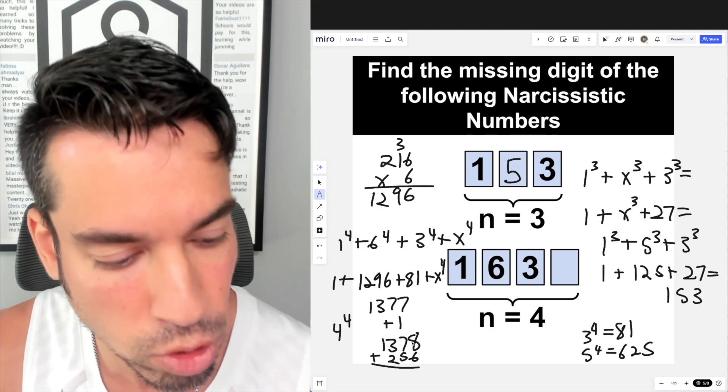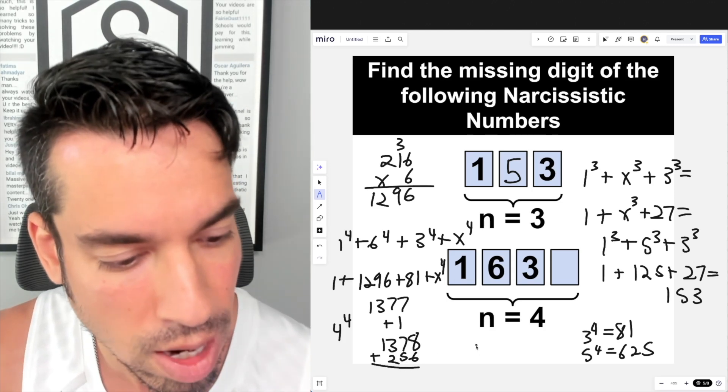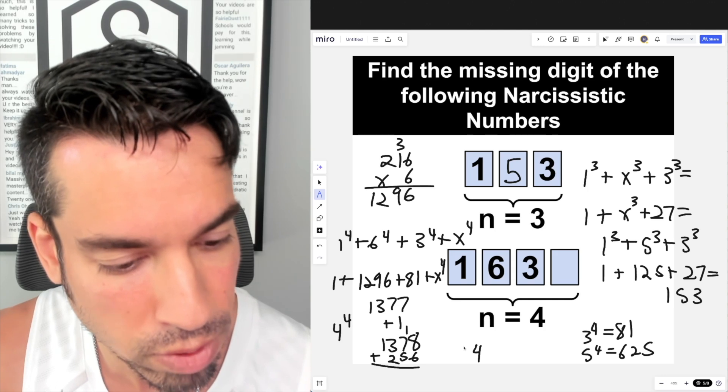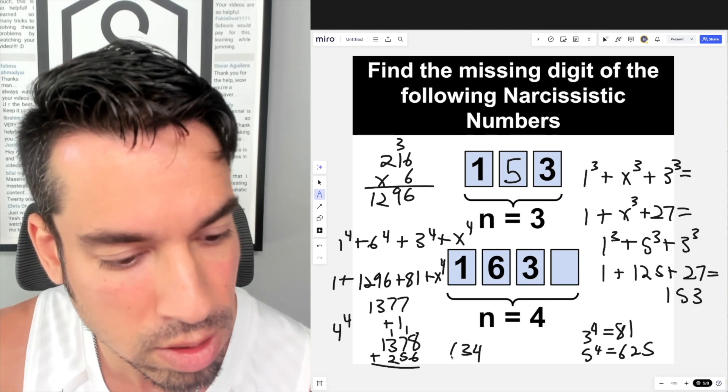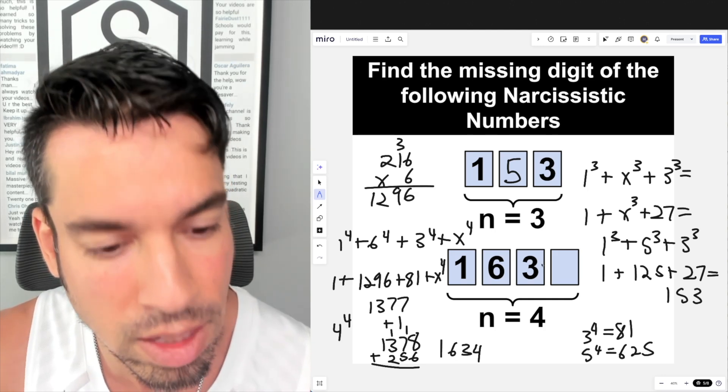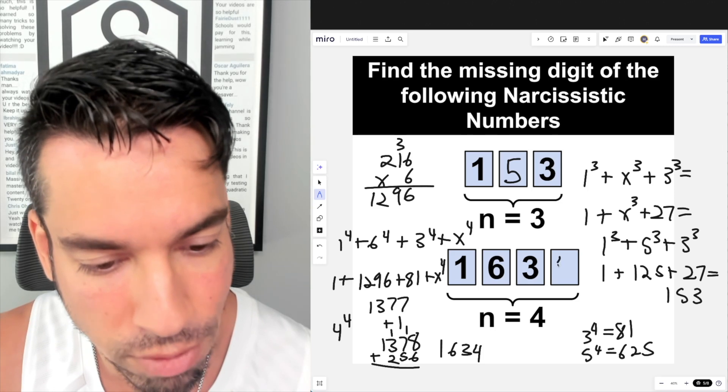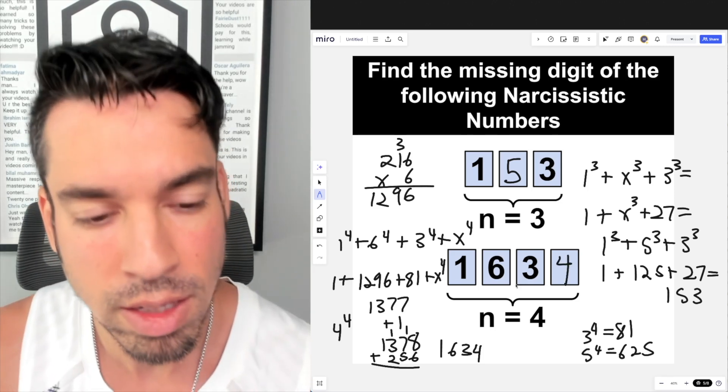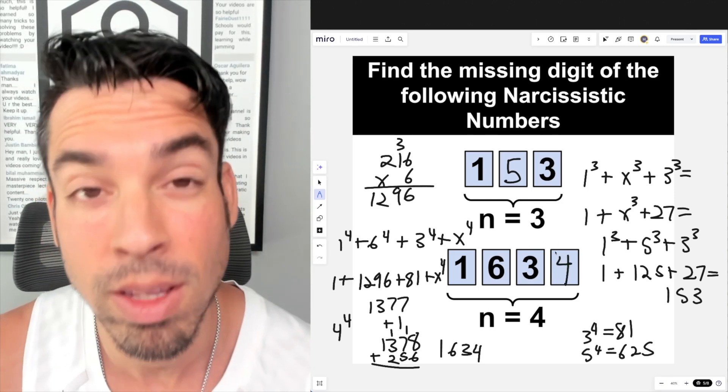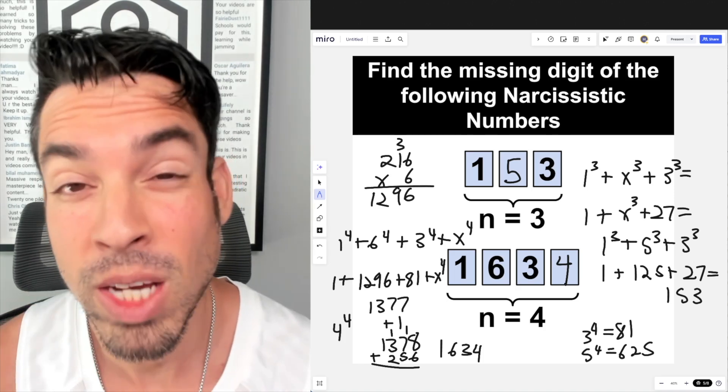We've got 14, carry the 1, 12, 13, carry the 1, 6 and 1, which is exactly what this number will be when we add a 4 here. So 1634 is the second narcissistic number. That's how you do it. Done!